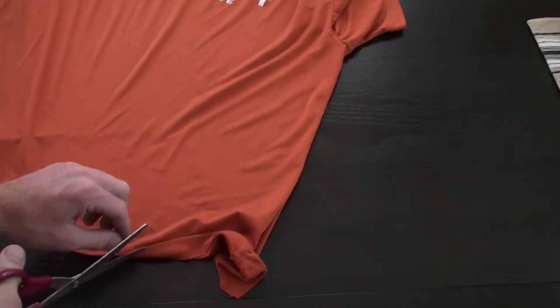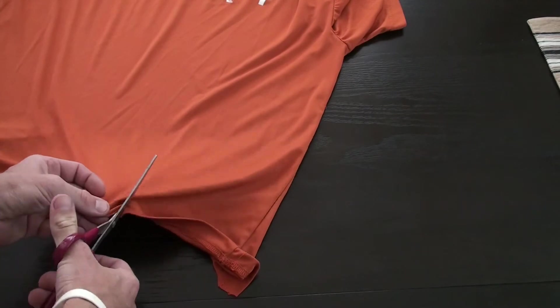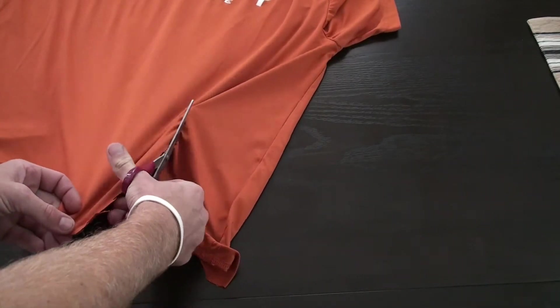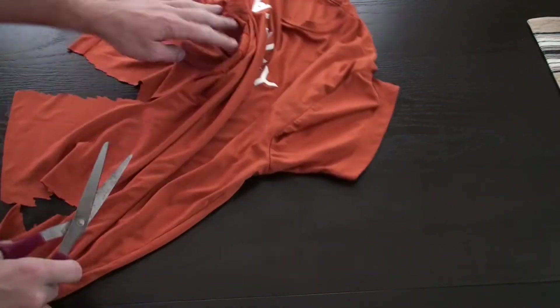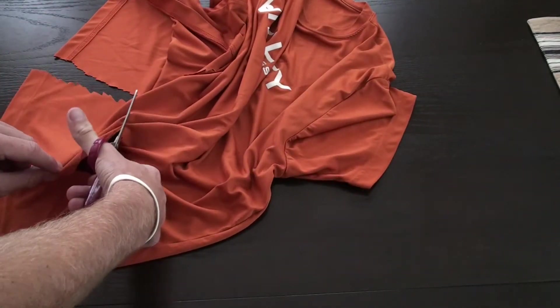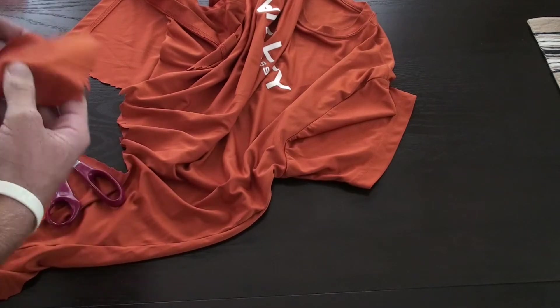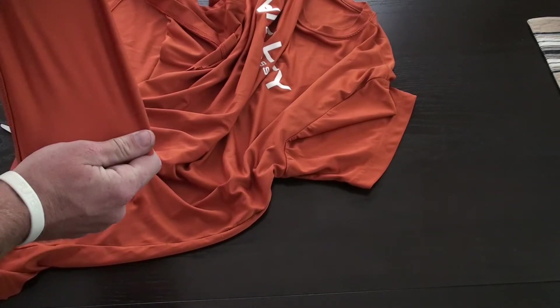Our first step, we want to take our scissors and cut a small to medium sized square out of our dry fit t-shirt. Now, this material will act as the pop filter. The cool thing is, you can do however many layers you want, we're just going to start off with one.